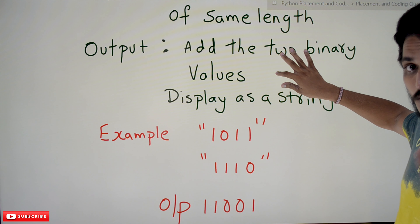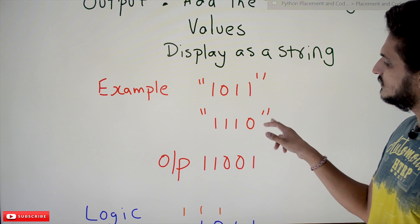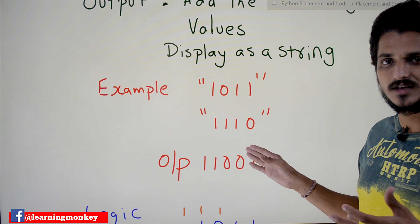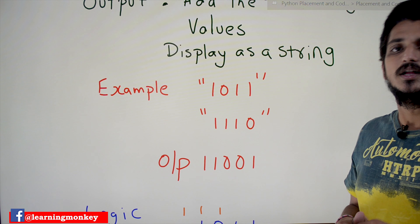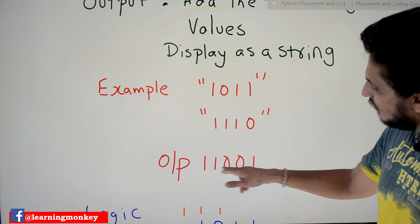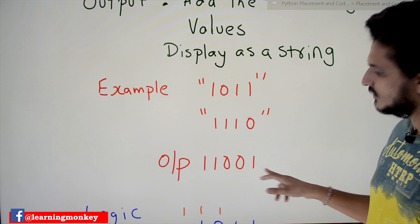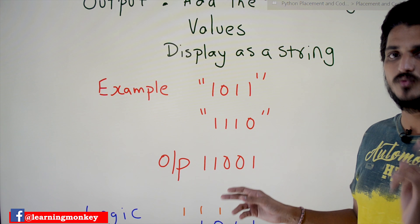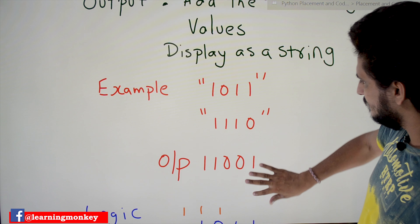Let's take an example so you understand better, then try to write the code on your own before checking the solution. We are taking two strings: '1011' and '1110'. After adding these two binary strings — the basics of binary addition come under Digital Logic Design number systems, so please watch our DLD playlist if needed. After adding, you get '11001'. If the carry value is 1, you must include it in the output; if carry is 0, you don't.